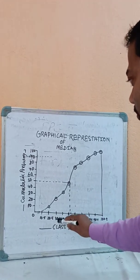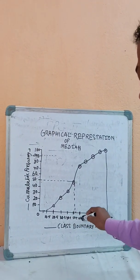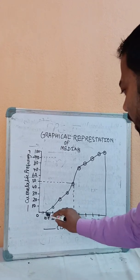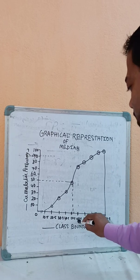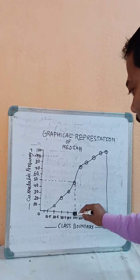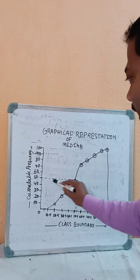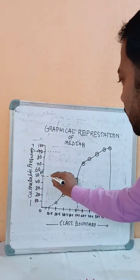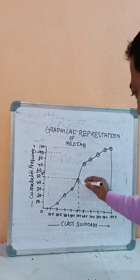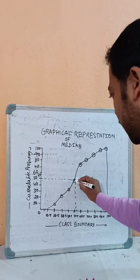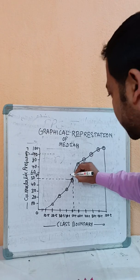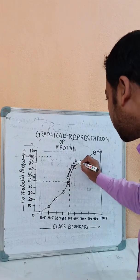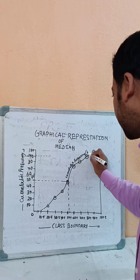The median value from the graph is around 50 or 51-point-something, which is 50.5. On the x-axis, 50.5 to 60.5 represents the median class. From the cumulative frequency curve, n/2 equals 50, so we draw a horizontal line at 50 on the y-axis to find the median on the x-axis. This uses the less-than cumulative frequency ogive.